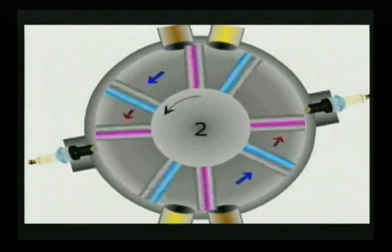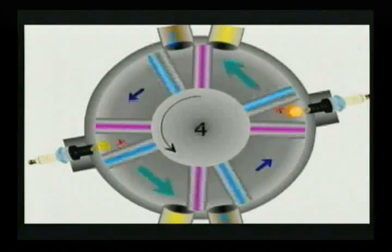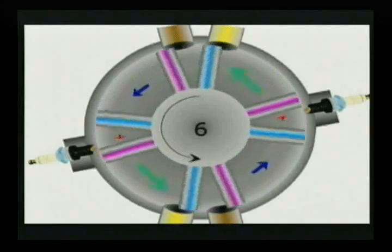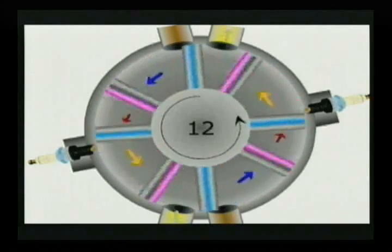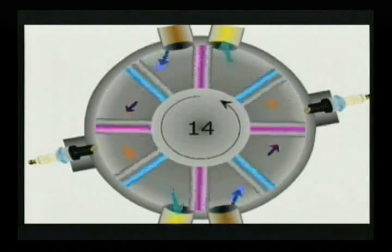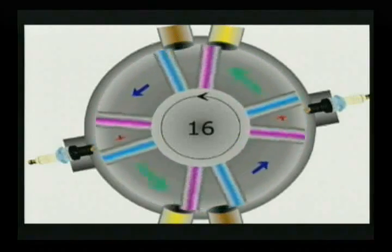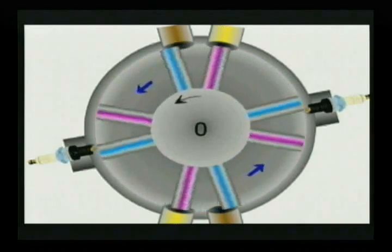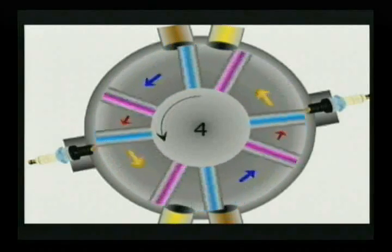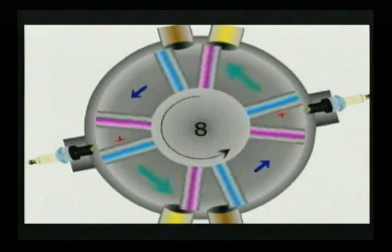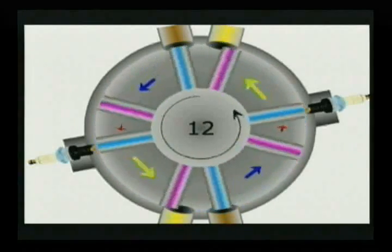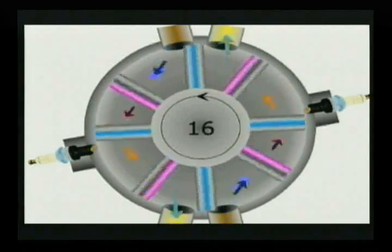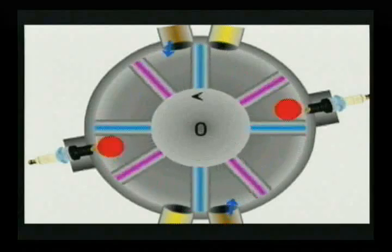In this simulation, the arrows represent the air-fuel mixture as it enters through the intake ports, is compressed to a peak, ignited causing the power stroke, and passed out through the exhaust ports. Notice the engine allows for two intake ports and two exhaust ports, which gives simultaneous power strokes and unmatched performance.